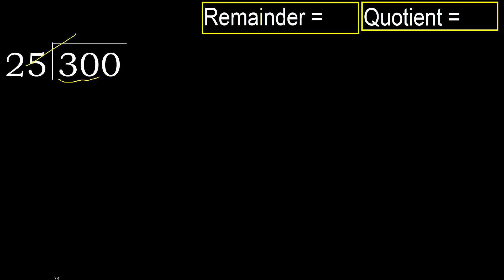25 — multiply by which number is nearest to 30 but not greater. 25 multiplied by 2 is 50; 50 is greater. Multiply by 1: 25 is not greater.